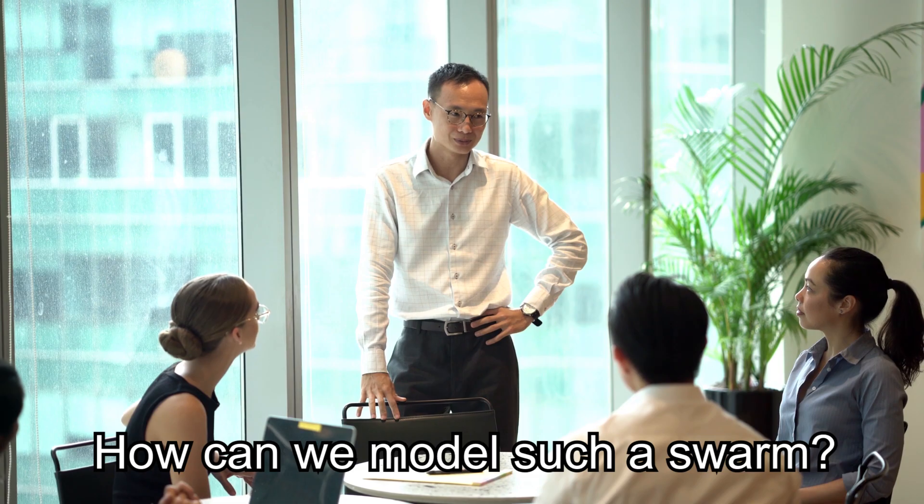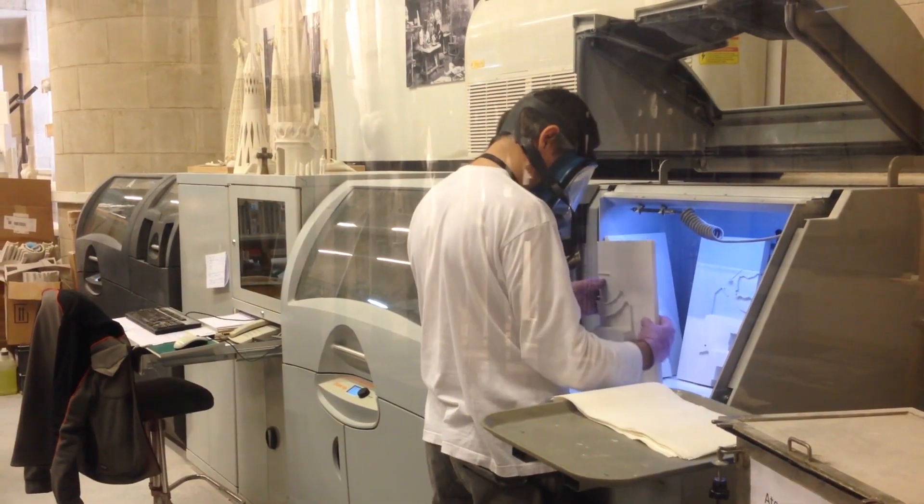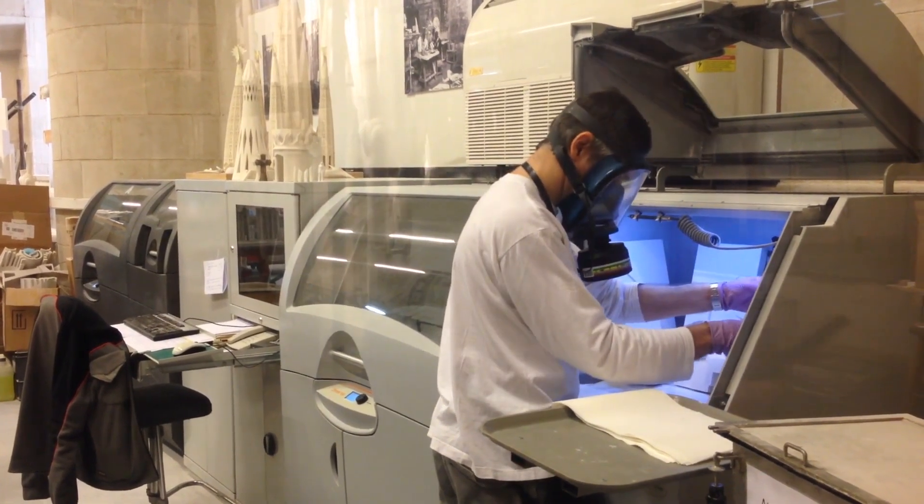How can we model such a swarm? One of the most studied models is the so-called Vicsek model. In the beginning of the 1990s, a Hungarian scientist called Thomas Vicsek and his colleagues tried to describe the collective motion of birds.